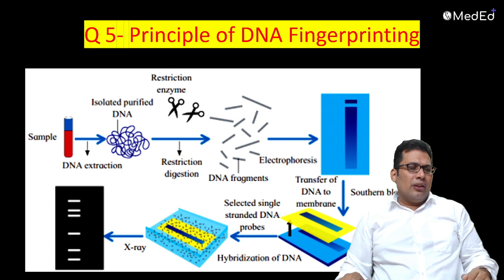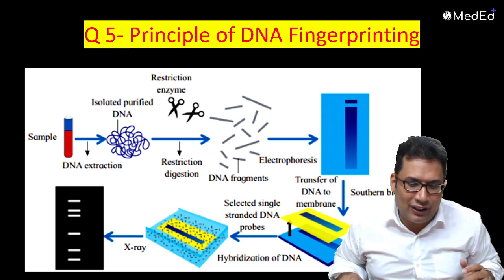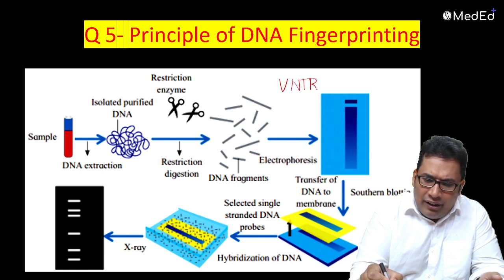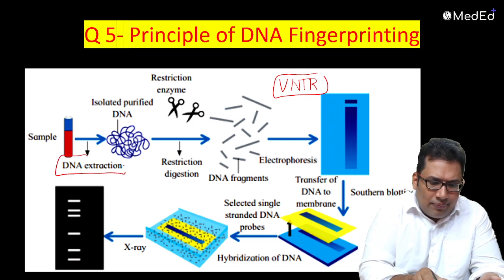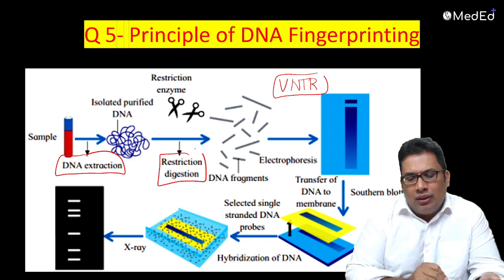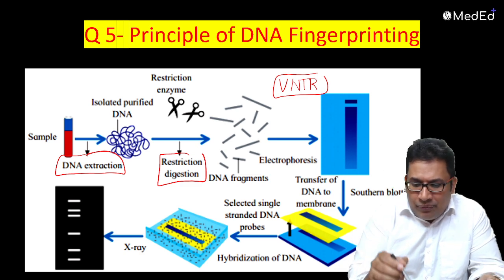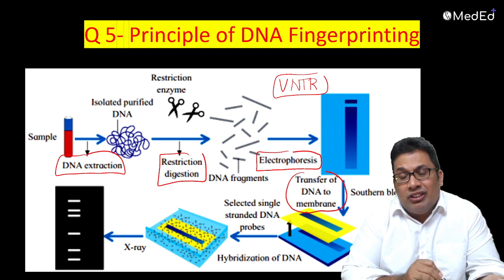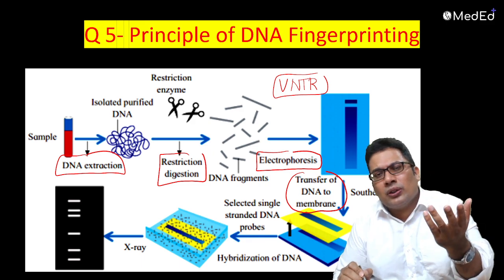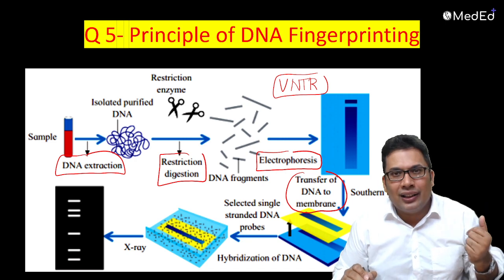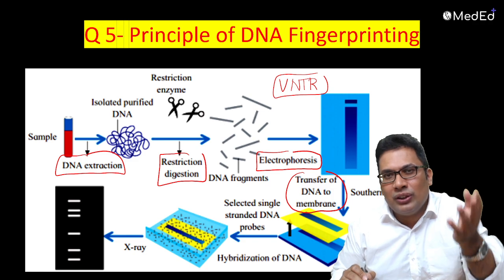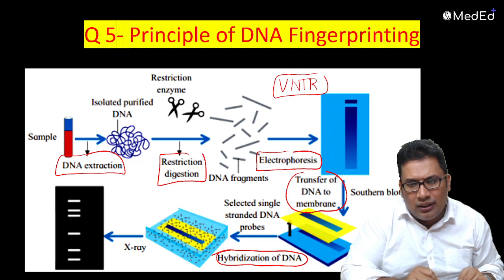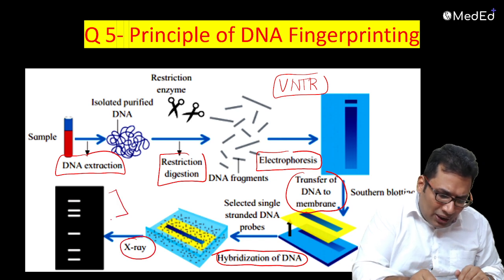The question can be asked: what is the principle of DNA fingerprinting, or what are the steps, or what is the blot technique used? Southern blotting is the answer. The principle is VNTR - Variable Number Tandem Repeats. DNA is extracted and using restriction enzymes it can be digested into restriction fragments. Then you do gel electrophoresis, followed by transfer of DNA to a membrane - which is known as Southern blotting. Southern blotting is used for DNA; Northern blotting is used for RNA. You can remember: South Indian dosa (DNA), North Indian roti (RNA). Then hybridization - you add some radioactive DNA probe and take the X-ray, and this is your DNA fingerprint.